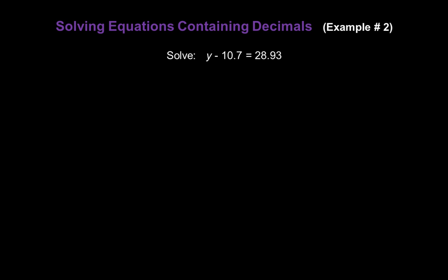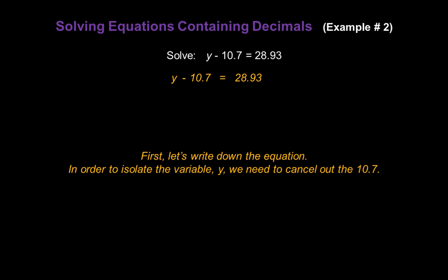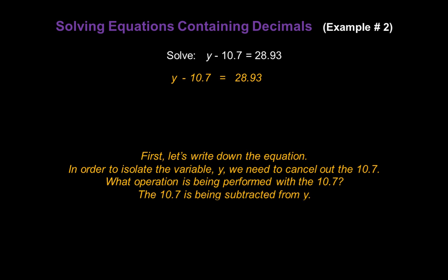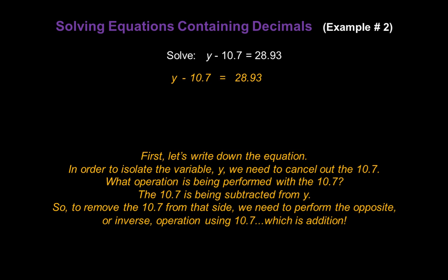Now let's solve y minus 10.7 equals 28.93. First, let's write down the equation: y minus 10.7 equals 28.93. In order to isolate the variable y, we have to cancel out 10.7. What operation is being performed with 10.7? The 10.7 is being subtracted from y. So to remove the 10.7 from that side, we have to perform the opposite, or inverse, operation using 10.7, which is addition.